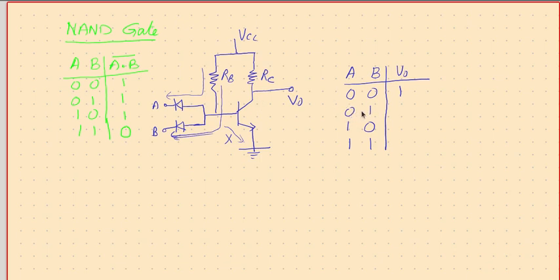Second condition: A is zero, B is one. B is one means this current will not be flowing, but since A is zero, this current will be flowing. Since this current is flowing, the current which flows through RB is drained out through this diode, so no current is available for the base-emitter junction to get the transistor into saturation. Hence it continues to be in cutoff, and if it is in cutoff, the output will be high — therefore VO will be one.